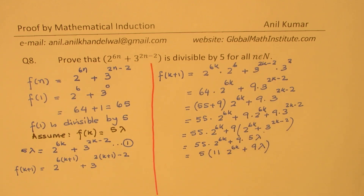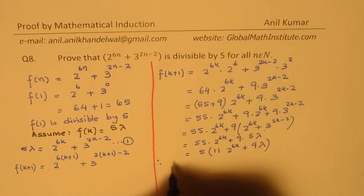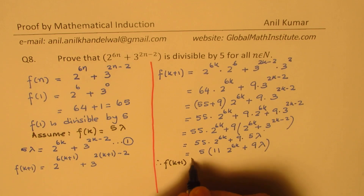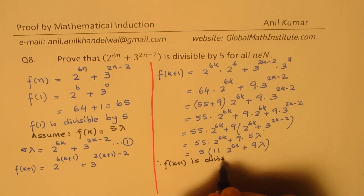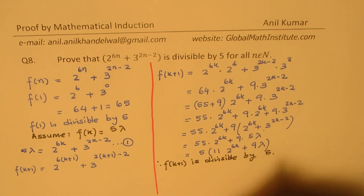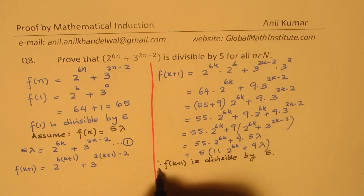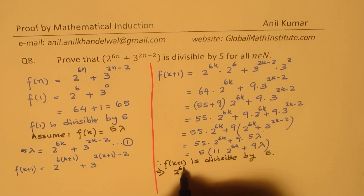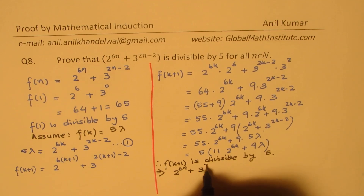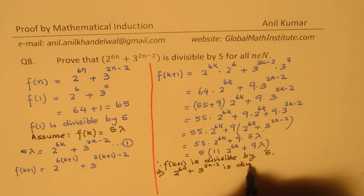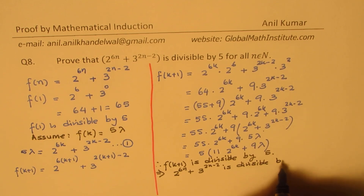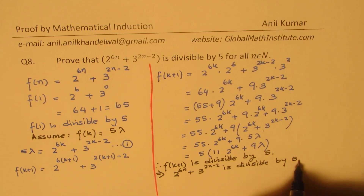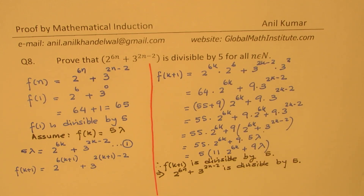Clearly, we have shown that f(k+1) is divisible by 5. Therefore, 2 to the power of 6n plus 3 to the power of 2n minus 2 is divisible by 5. I hope that makes sense. Feel free to write a comment, share your views, and if you like and subscribe to my videos, that'd be great. Thanks for your time and all the best.